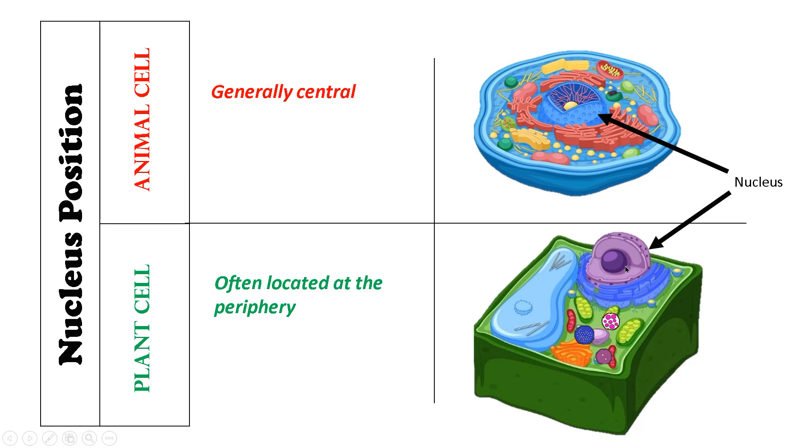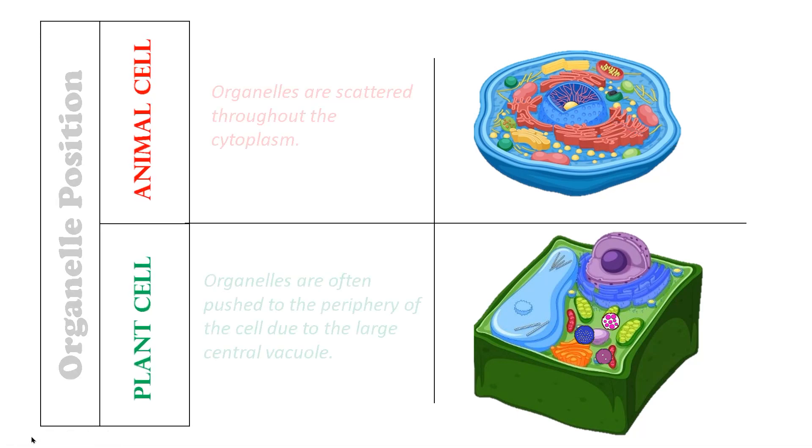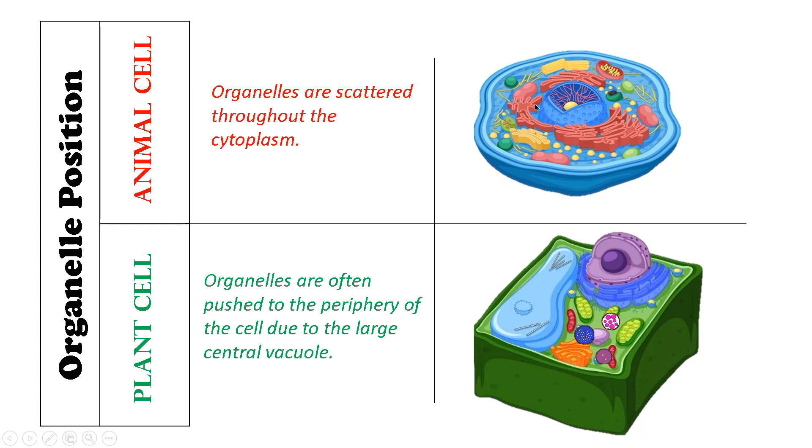The next difference is about the arrangement of cell organelles within the cell. In case of animal cells, cell organelles are found scattered throughout the cytoplasm, whereas in case of plant cells, cell organelles are often pushed to the periphery of the cell.